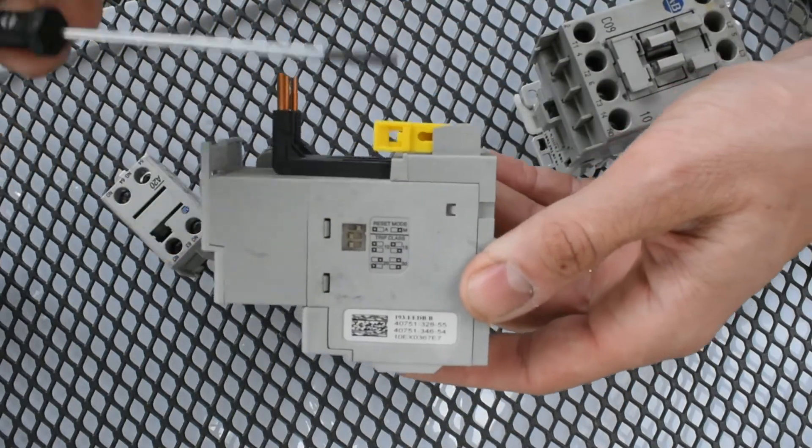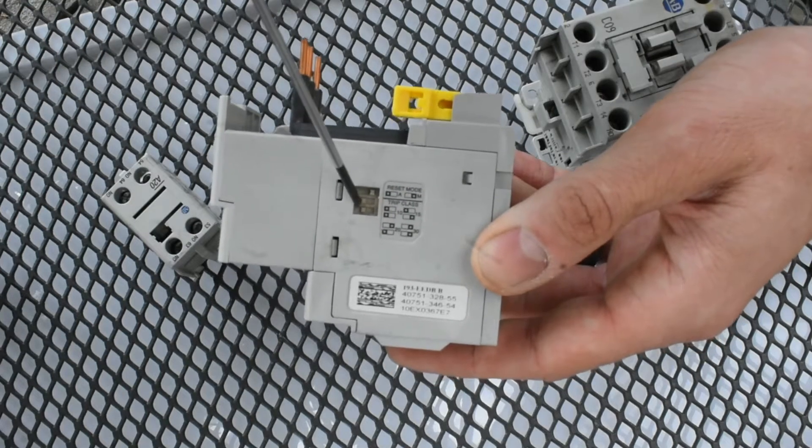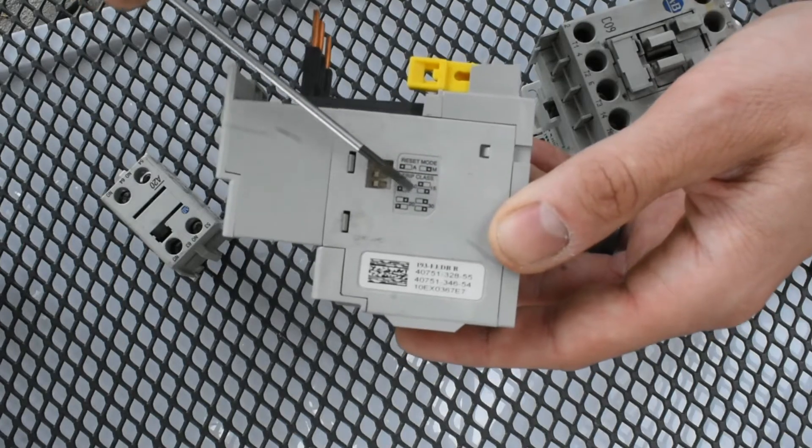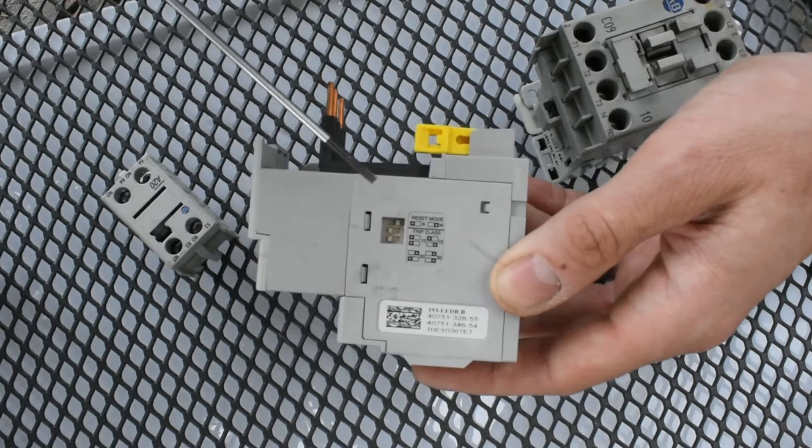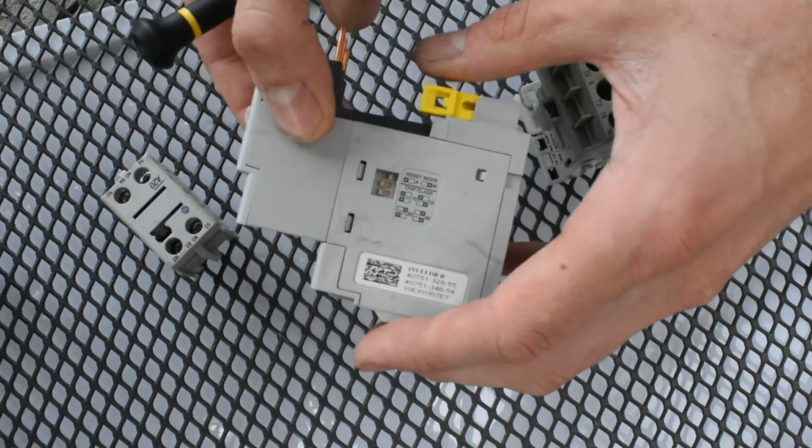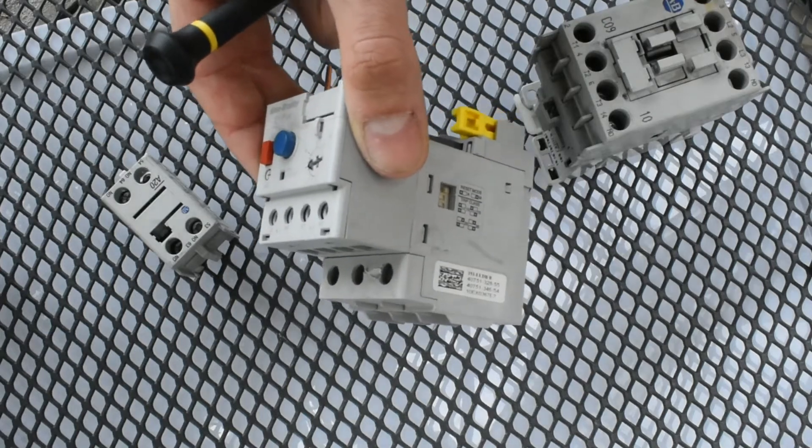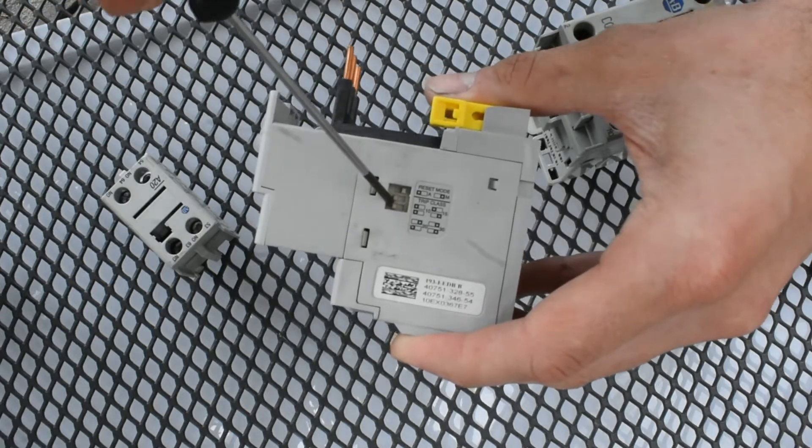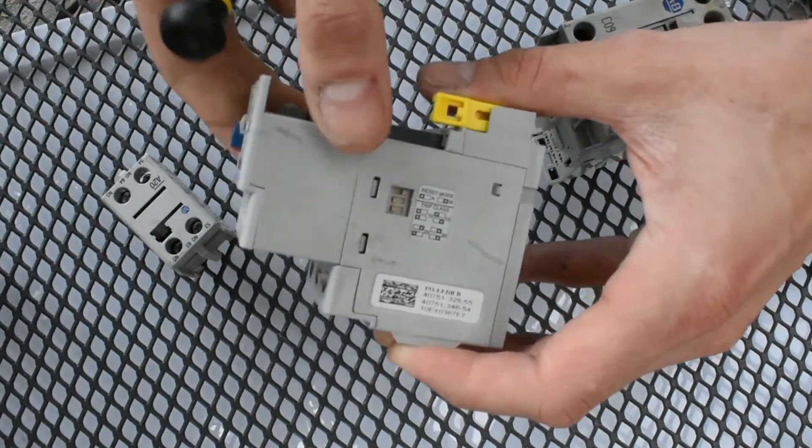Now, this one has a selectable motor trip class. You see a set of selector switches, and depending on the position that these selector switches are in, it has a trip class that's either 10, 15, 20, or 30. And that refers to the number of seconds that the motor, that this overload is going to be able to withstand a much higher current. So if we have a relatively slow startup for this motor, and it's going to take 30 seconds of high current, and that's okay at the beginning, in fact, it's expected, then I would want to set these selector switches into the position that allows the trip class of 30 for 30 seconds.